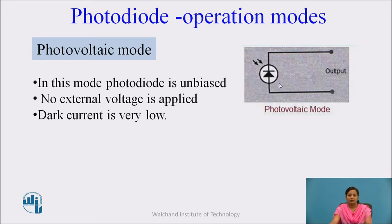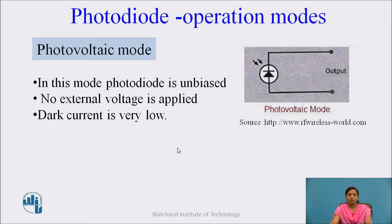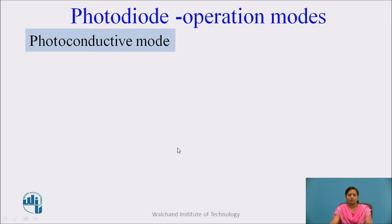In the photovoltaic mode, the dark current which flows through the photodiode is very, very small. The next mode of operation is the photoconductive mode.